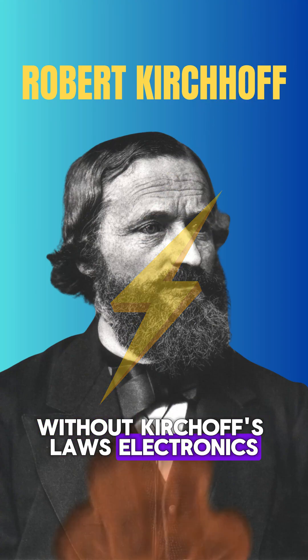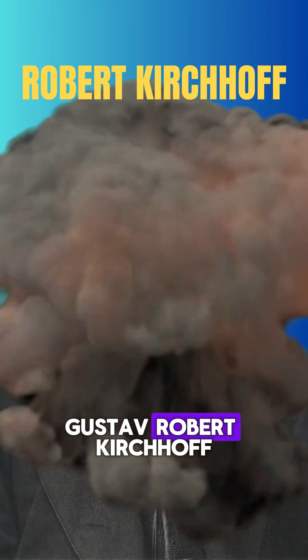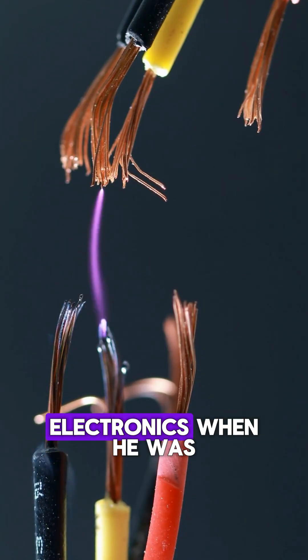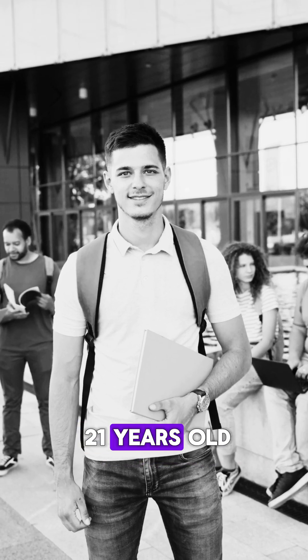Without Kirchhoff's laws, electronics would not exist. Gustav Robert Kirchhoff, for that was the name of this genius, invented the laws governing electronics when he was 21 years old.